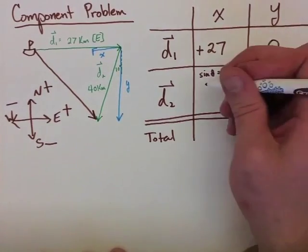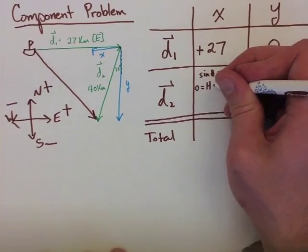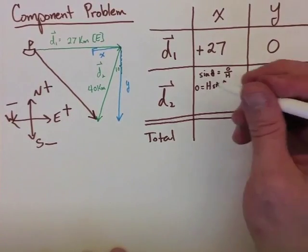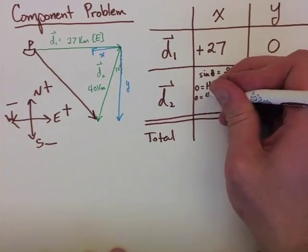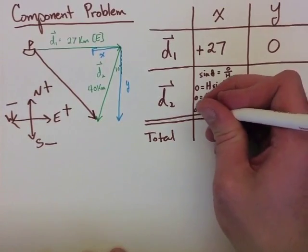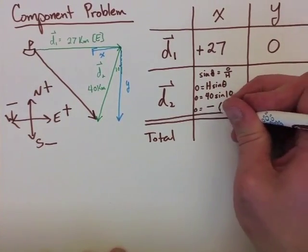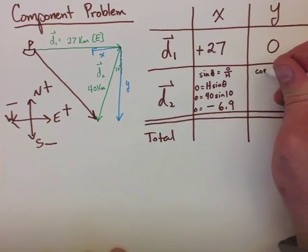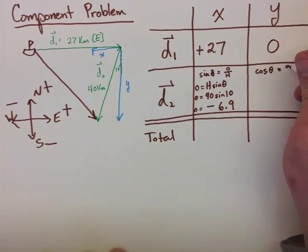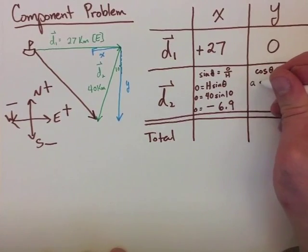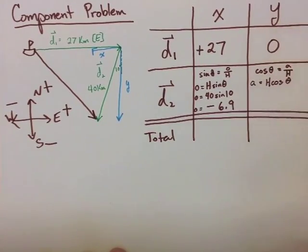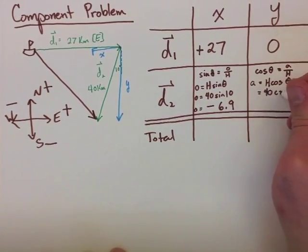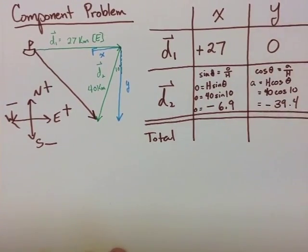To find the x, we need to use sine theta in this case because of the angle we're given. We rearrange the formula, and we find our x value to be equal to negative 6.9. Again it's negative because we're moving in the west direction. Now to find the y value, we're going to use cos, because we need to find the adjacent value. In this case, we find the y value to be equal to negative 39.4.